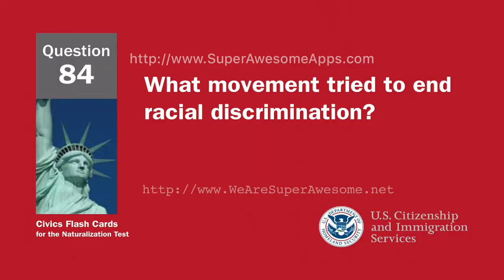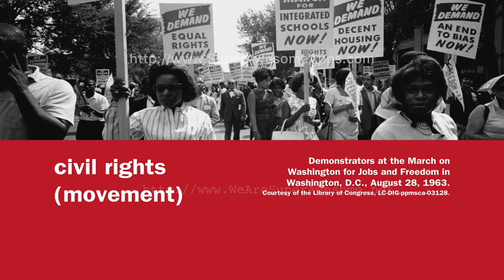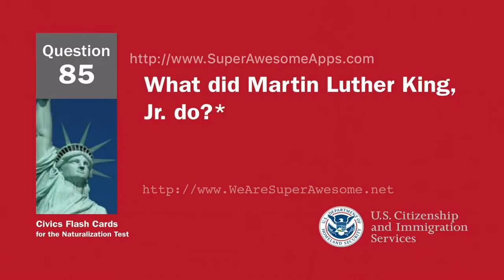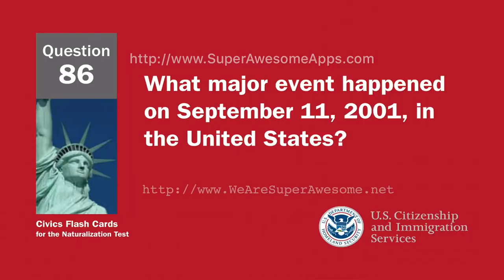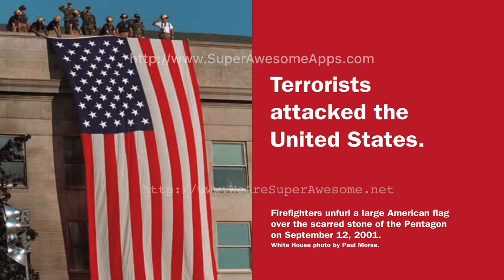What movement tried to end racial discrimination? Civil Rights Movement. What did Martin Luther King Jr. do? Fought for civil rights. Worked for equality for all Americans. What major event happened on September 11, 2001, in the United States? Terrorists attacked the United States.